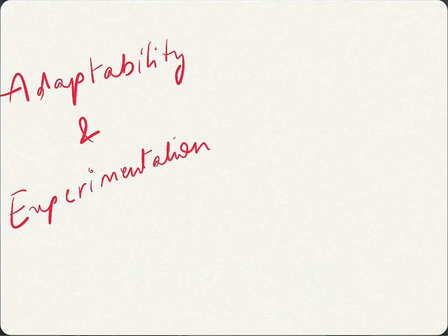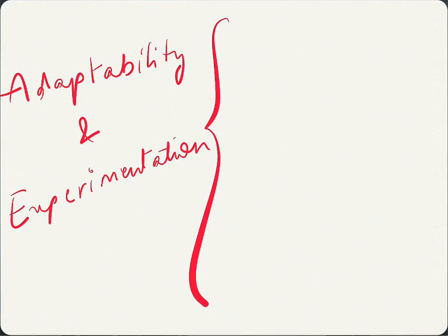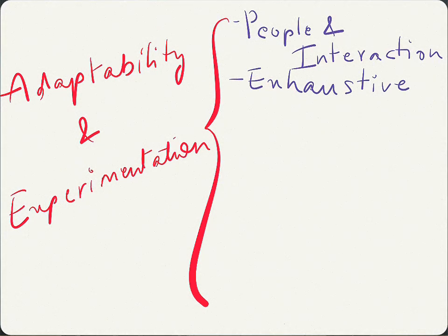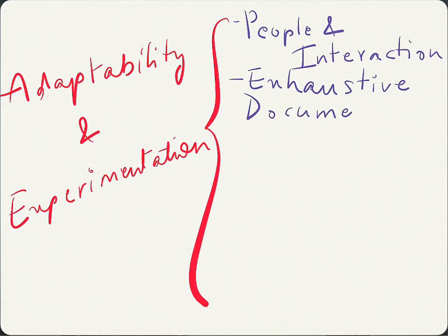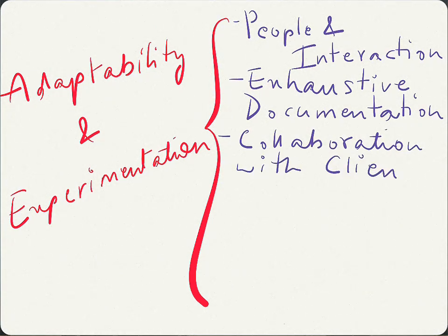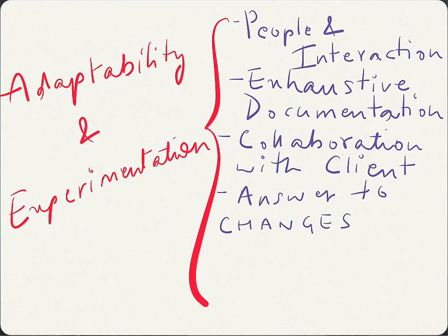These two principles translate into four main ideas when you implement an agile methodology in your company. First, people and interactions are more important than processes and tools. Second, any development of the product has to be backed up by exhaustive documentation. Third, collaboration with the client is a key element for the success of the project. And fourth, answer to changes is more important than planning and following exactly the original plan.